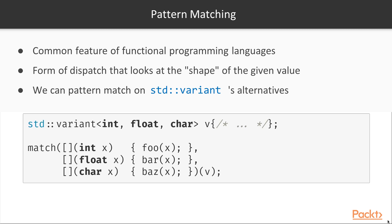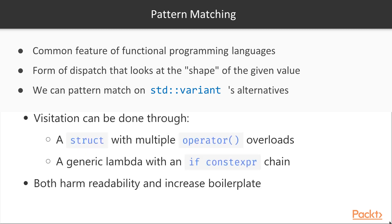We can pattern match on std::variant's alternatives. As an example, imagine having a variant v of int, float, and char. When we use the match function and provide a lambda for int, a lambda for float, and a lambda for char, what's going to happen is that we'll destructure the variant, figure out the active alternative inside it, and then call the corresponding function.